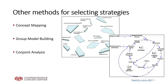Group model building, borrowed from the systems dynamic literature, engages stakeholders in identifying and implementing solutions to messy problems. Its advantage is that it creates models studying causal loops that help understand potential consequences of system structure prior to actual implementation — giving you an idea of what would happen if you implemented X versus Y. Conjoint analysis also helps measure stakeholder preferences for intervention attributes and how changes to those attributes may influence implementation through better acceptability or feasibility. A good primer on these methods is in the reference cited on the slide.